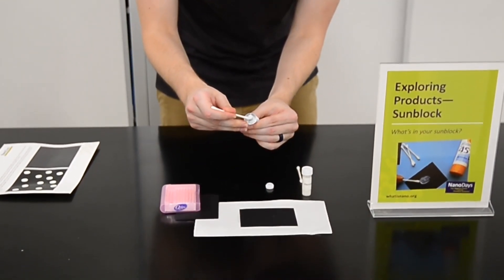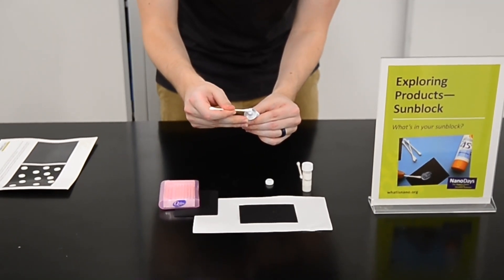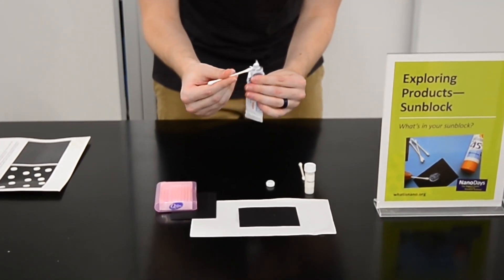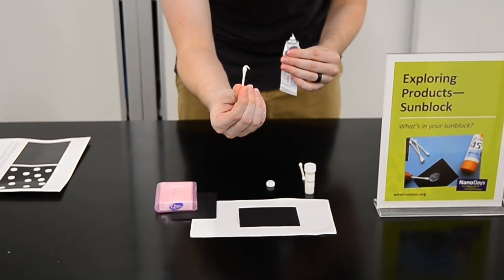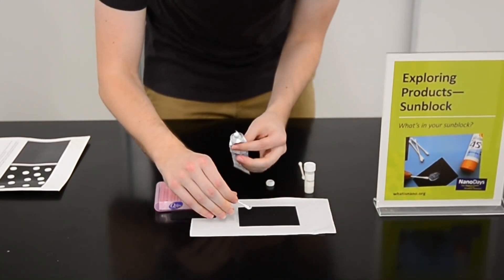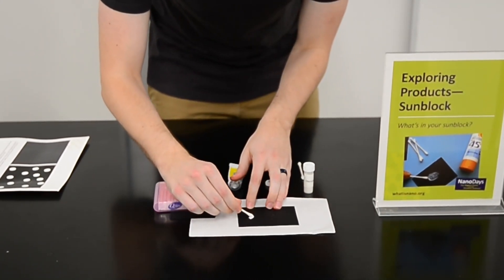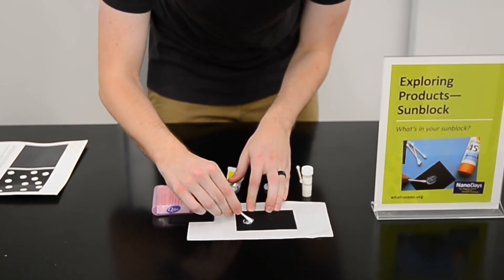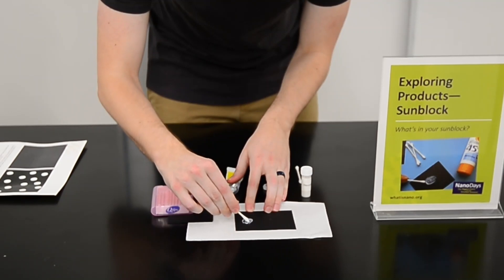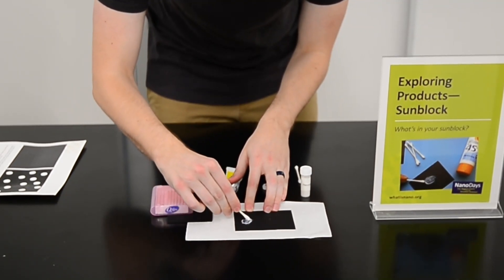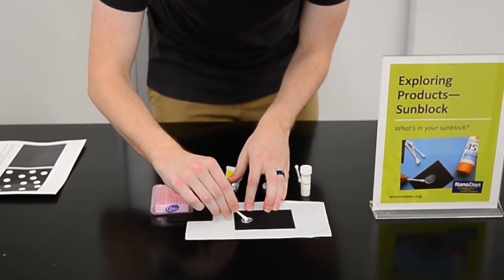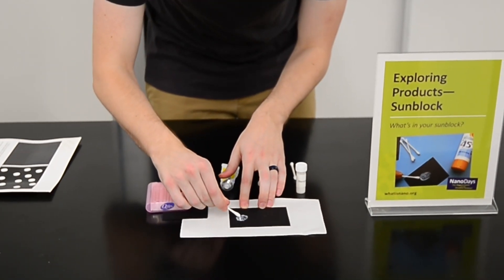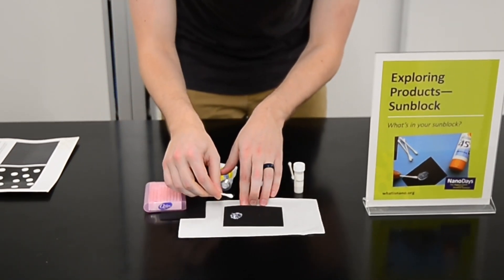So you'll see here, I've got a little dab on the q-tip, not too much. See it's really white, and you'll notice here as I wipe it onto the construction paper, that I'm rubbing it in, I'm rubbing it in, and some of it's kind of absorbing, but you can still really see the white layer on top. I imagine that if you'd apply this sunblock to your skin, you might look like a ghost.